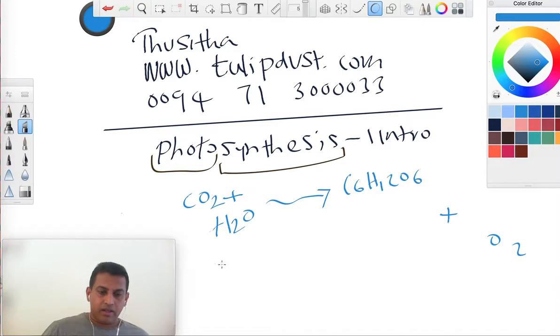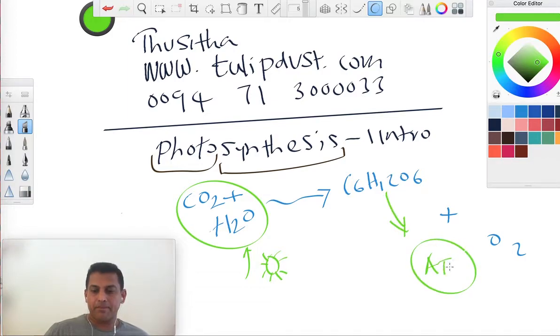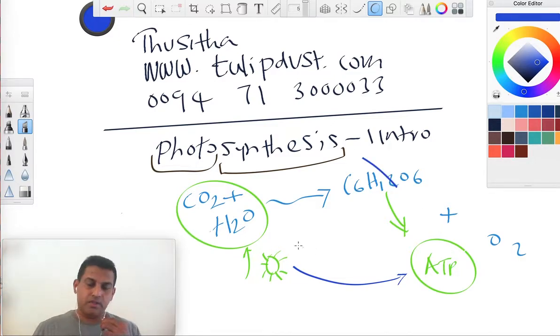That means the energy in these two molecules is coming from the sunlight. So the sunlight energy is converted into chemical energy. Chemical energy comes from glucose, that's ATP, adenosine triphosphate. So the process is solar energy converting to metabolic energy ATP. This is called photosynthesis, the generation of energy using light energy to produce chemical energy.